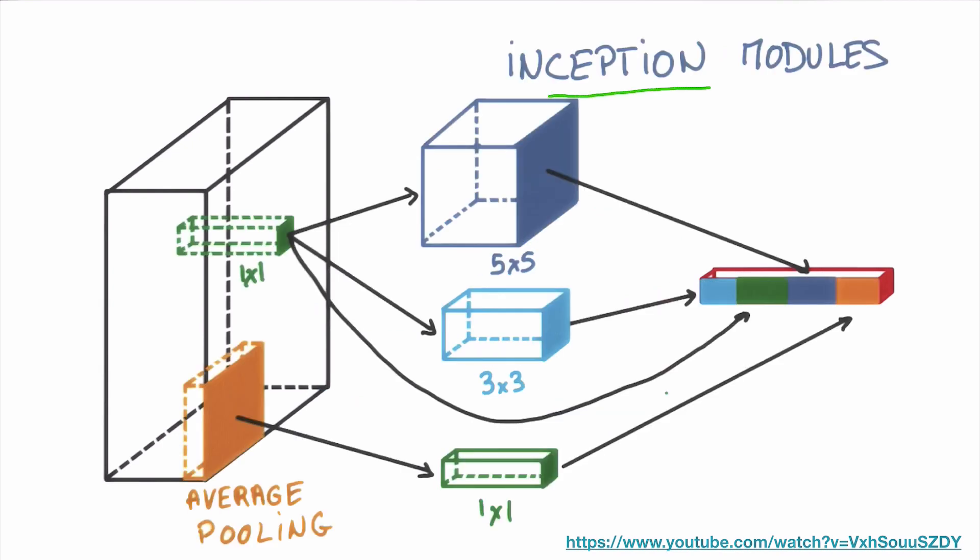The idea of inception is quite simple. Why not try all possible or some of possible combinations? For example, here we're going to use 5x5 filter, 3x3, and 1x1, and then basically we're going to concatenate them all together. But if you look at it a little bit closely, we are using 1x1 convolution first, and then we're going to connect them to 5x5, 3x3, and so on with average pooling. Why are we using 1x1 convolution in here?